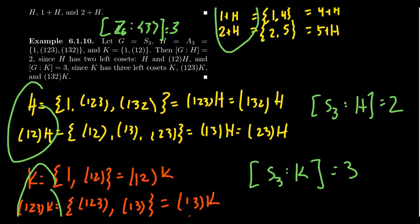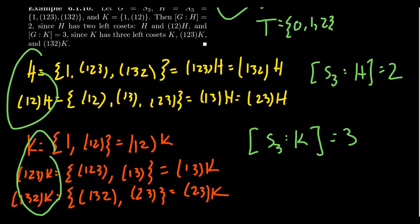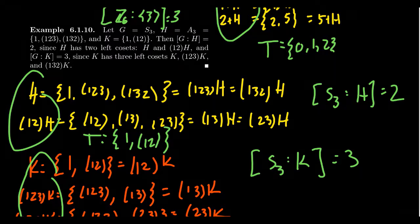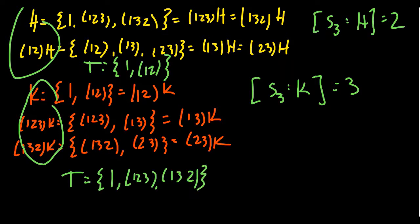For example, take the group Z₆ with the subgroup H, the cyclic subgroup generated by 3. There are three cosets: H, 1+H, and 2+H. A transversal of these cosets would be the set {0, 1, 2}. If we take the group S₃ and H to be the alternating subgroup, we have two cosets, and a transversal could be {e, (1 2 3)}. If we take the subgroup K, we have three cosets, and a transversal could be {e, (1 2 3), (1 3 2)}.